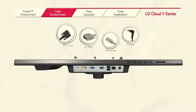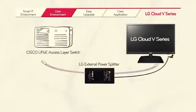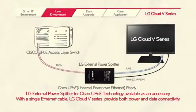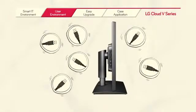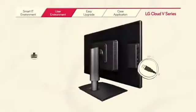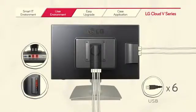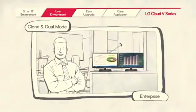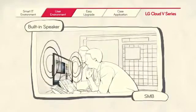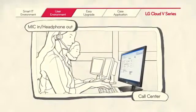The V Series comes with various ports and an all-in-one layout. With a single Ethernet cable, LG Cloud V Series provides both power and data connectivity. The LG Cloud V Series comes with six USB ports to better meet your needs for various purposes. The built-in DVI out port allows the use of extended display for higher productivity. The LG Cloud V Series monitor type also has built-in speakers, and the headphone out port gives the Cloud V Series more flexibility.